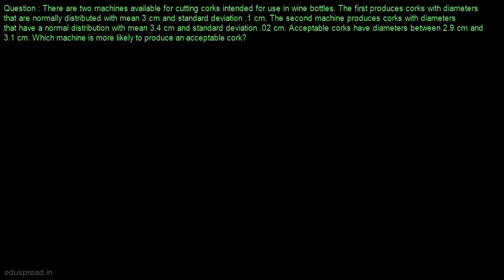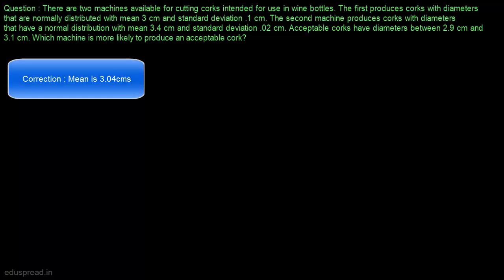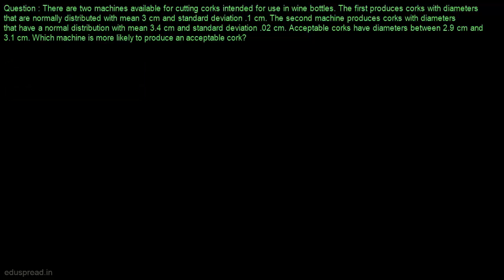In this video, I am going to solve this question. There are two machines available for cutting cogs intended for use in wine bottles. The first produces cogs with diameters that are normally distributed with mean 3 cm and standard deviation 0.1 cm. The second machine produces cogs with diameters that have a normal distribution with mean 3.4 cm and standard deviation 0.02 cm. Acceptable cogs have diameters between 2.9 cm and 3.1 cm. Which machine is more likely to produce an acceptable cog?